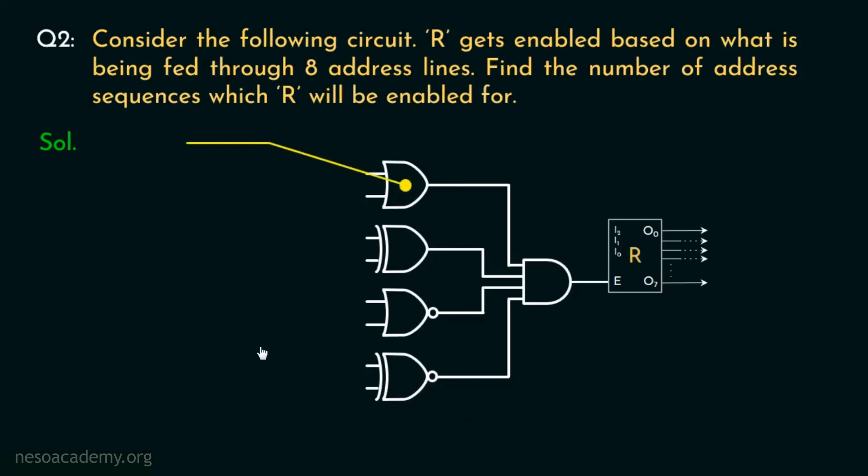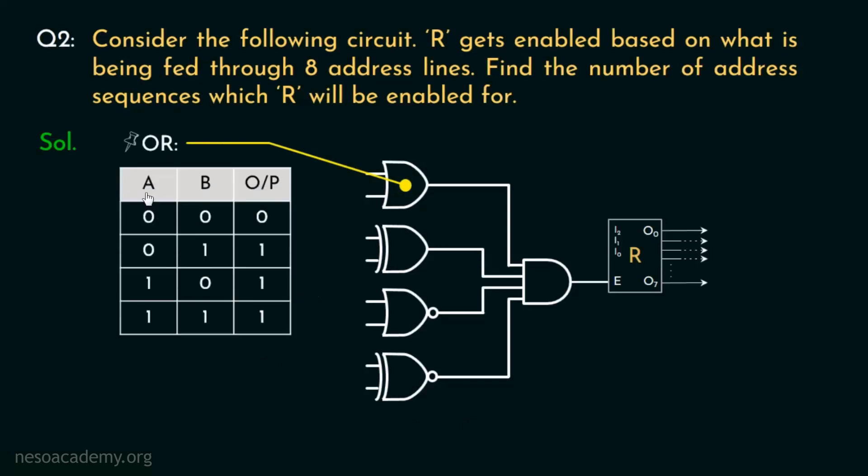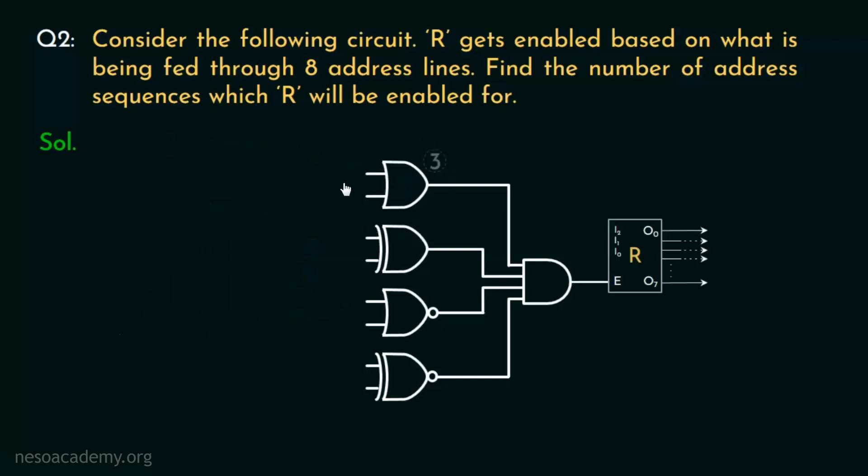Now the first one is an OR gate. If we observe the truth table of that, for 2 inputs A and B, the output 1 is produced in 3 instances. That is, the input sequences 0,1, then 1,0, and 1,1. So for the address bits given as inputs through the OR gate, we have 3 different sequences.